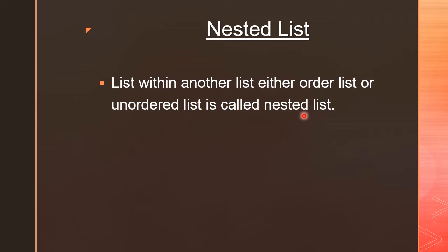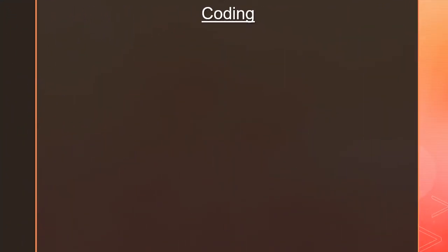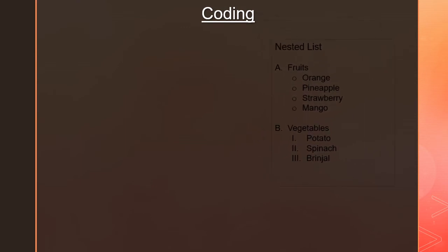Now let us see the coding for the nested list. This is the output that we want to achieve with our coding. When you see the coding, you might get some confusion initially, but once you practice, you will understand how to write the nested list.